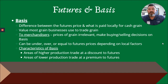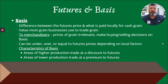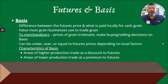Basis is the difference between the futures price and what is paid locally for grain. '$0.20 under the board' or '$0.35 under the board' is some good jargon you'll hear occasionally. It's the value most grain businesses use to trade grain. To a merchandiser, the price of grain is almost irrelevant — lots of them make buying and selling decisions based upon basis, because it can be under, over, or equal to the futures price based upon a number of different local factors.